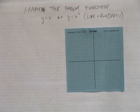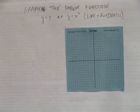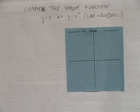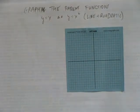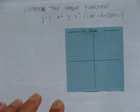In this video, we'll look at graphing the parent functions y equals x and y equals x squared. The first one, of course, being the line, and the second one being the quadratic.